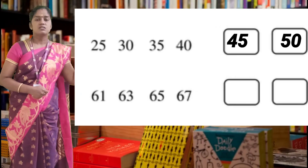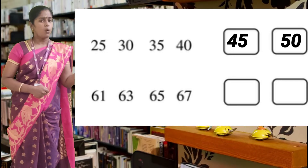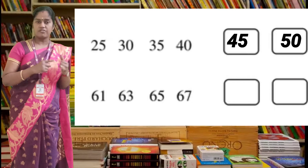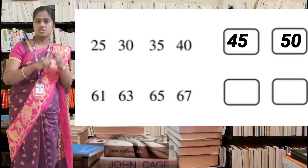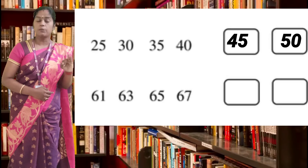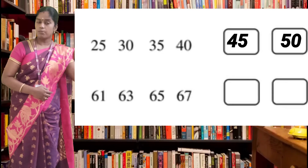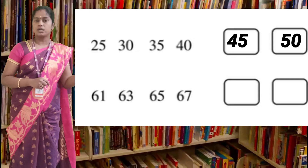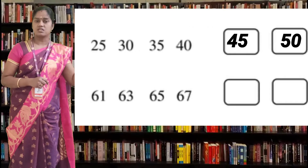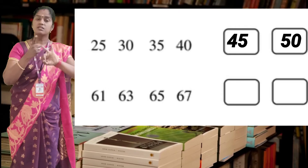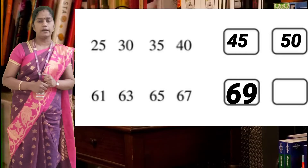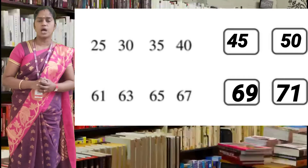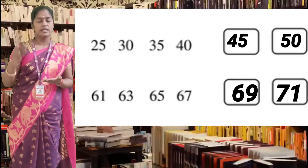One more example: 61, 63, 65, 67 — what number comes in the next two boxes? First find out the difference. After 61 the number is 63 — so 62, 63 — it follows a rule: skip counting by 2s. After 63 comes 65, and 63 to 65 is also 2. After 67, just add 2 — that is 69 — so write 69 in the first box. Next add 2 more: 71 — so 71 comes in the last box. This is how patterns are created in numbers.